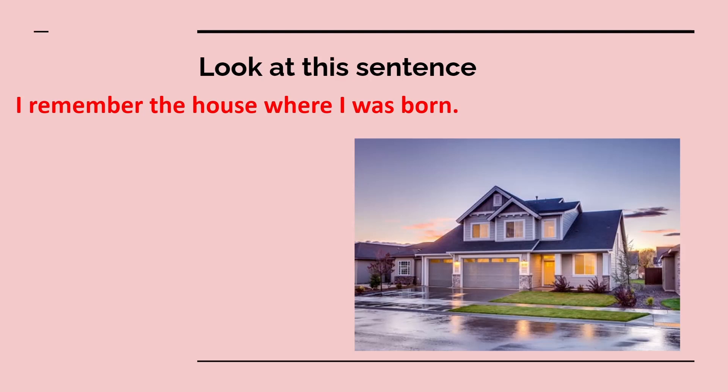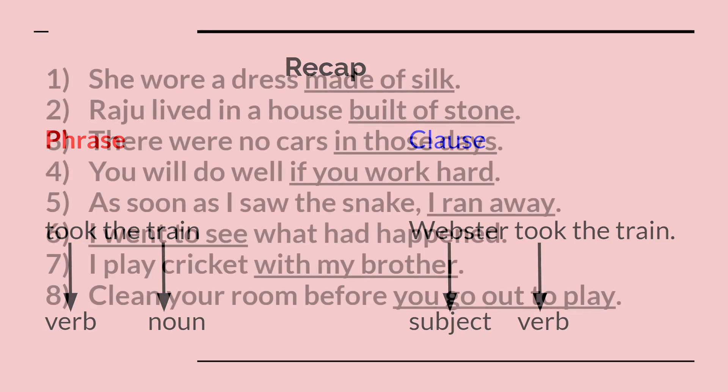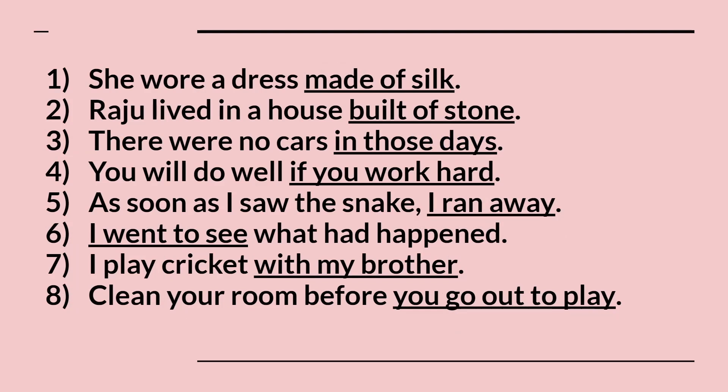Such groups of words are only clauses but not sentences — they are called dependent clauses, because they depend on the main sentence to give complete information. So let's do a recap: a phrase is a group of words without a subject and a verb — for example, 'took the train' has no subject. A clause is a group of words with a subject and a verb — for example, 'Webster took the train' has both a subject and a verb. Note: a phrase can never be a sentence.